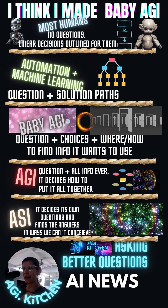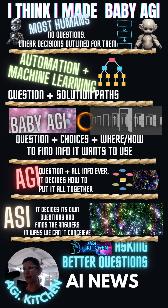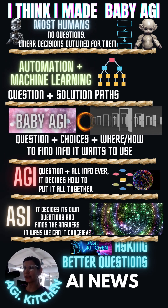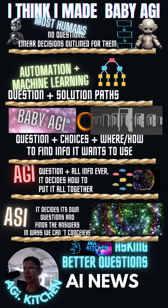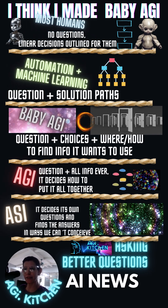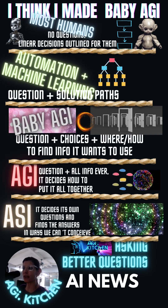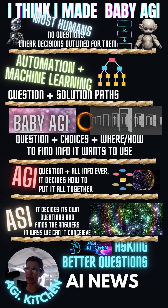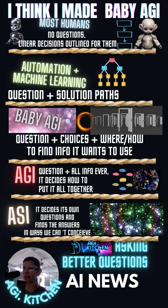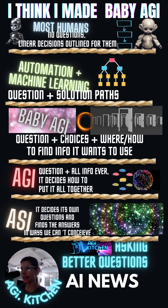This baby AGI that I made — it's given a question or set of questions and then it's given choices. And then it's told, if you're going to use this data, this is how you get to that data or this is where you can find that data. So it's not completely AGI, but it's like a baby AGI.